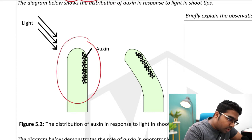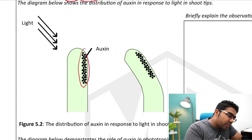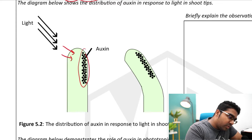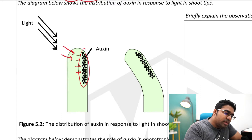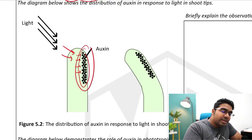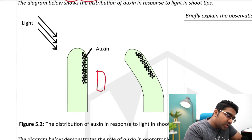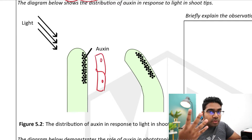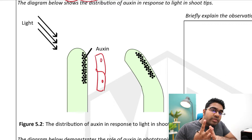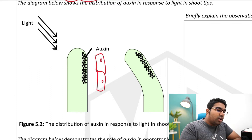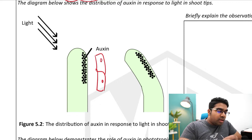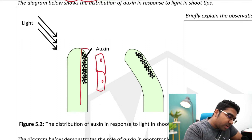First of all, auxin will move away from the light. If you look at this picture, light is coming from this side and the auxin is all moving away from it, so auxin will be on the opposite side — that is the shaded side. Auxin promotes cell elongation in the shoot tip, causing cells to elongate. Remember the four zones of growth: we have the zone of cell division, and just below that the zone of cell elongation.